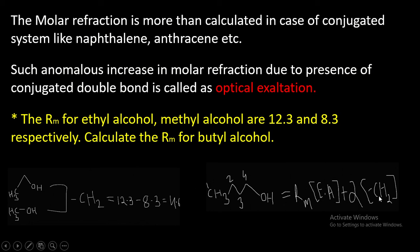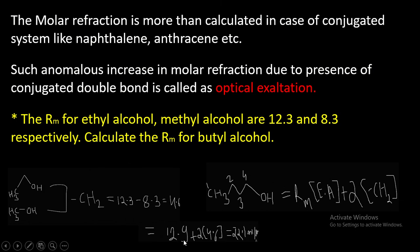4.6 is the molar refractivity of the CH₂ group. Substituting the value: 12.9 + 2 × 4.6 = 22.1 mL/mol. Therefore the molar refractivity of butyl alcohol is 22.1 mL/mol.